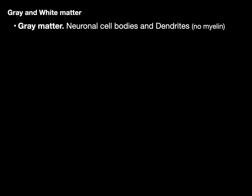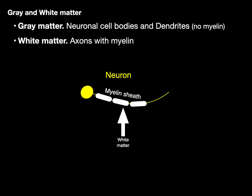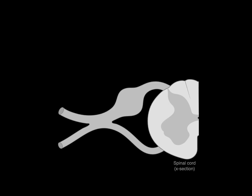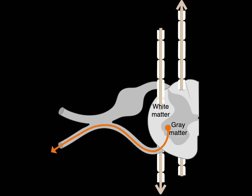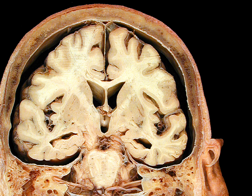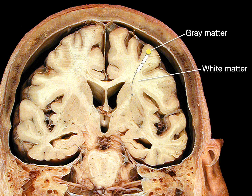What's the difference between gray and white matter? Gray matter consists of neuronal cell bodies and dendrites with no myelin, while white matter consists of axons with myelin. Myelin is white because it's composed of fatty lipids and protein. Looking at a spinal cord cross-section, the gray matter in the center contains cell bodies — in this case, motor neurons. White matter consists of long myelinated axonal tracts. Looking at a coronal section of a cadaver donor, we see gray matter cell bodies giving rise to the white matter, which are these long myelinated axonal tracts.